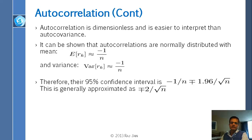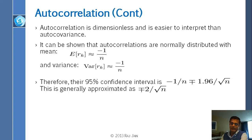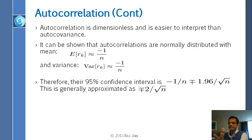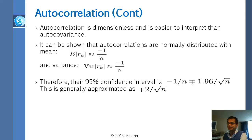The confidence interval is ±2/√n: we drop the mean (too small when n is large) and round 1.96 to 2. In practice, we draw a boundary of ±2/√n around zero. If any autocorrelation falls inside that boundary, we say that correlation is zero — because within the boundary, the confidence interval crosses zero.